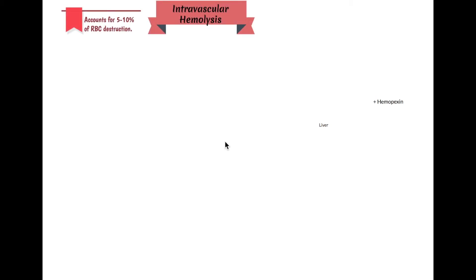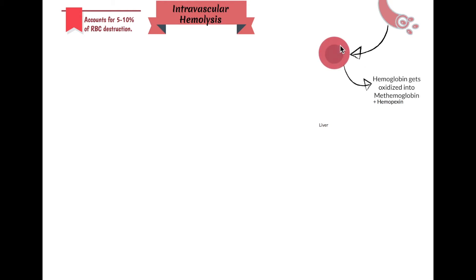Now let's move on to intravascular hemolysis. Intravascular hemolysis accounts for only 5 to 10 percent of RBC destruction — nothing compared to extravascular hemolysis at 90%. It happens in your blood vessels. When hemoglobin breaks down, it gets oxidized into methemoglobin, then gets picked up by hemopexin, and goes to the liver for further processing.